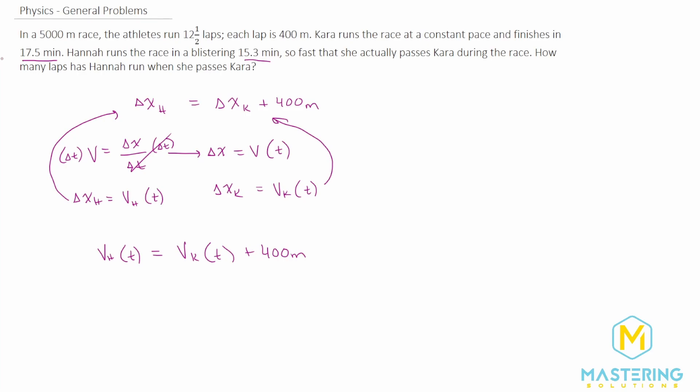When Hannah passes Kara, we'll use that and work backwards to figure out how many laps Hannah has run at that point. So if we isolate t, let's first move over this.